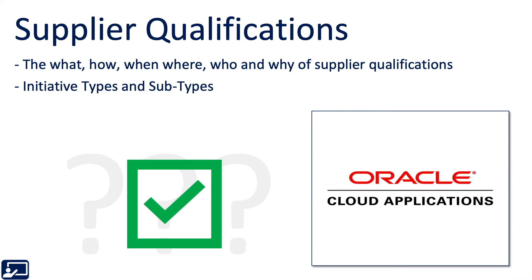Okay, so let's recap. You should now understand the what, how, when, where, who, and why of supplier initiatives, qualifications, and assessments. You should understand those initiative types and subtypes and a little bit of how or why and when you would use them. If you're still not sure, watch it again — it's free. But if you understand the material, it's time to move on to the next lesson in this course.